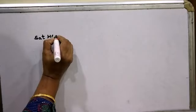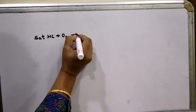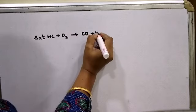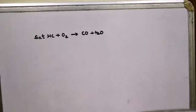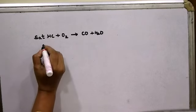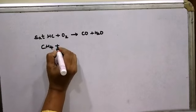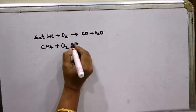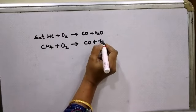Hydrocarbons burn in sufficient supply of air or oxygen to form carbon dioxide, water, heat, and light. Now, if the air is not sufficient — that is, if hydrocarbons burn in insufficient supply of air or oxygen — the products will be different. Specifically, saturated hydrocarbons burn in insufficient supply of air or oxygen to form carbon monoxide and water. Saturated hydrocarbons are alkanes.